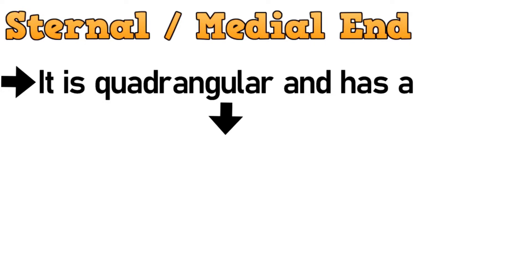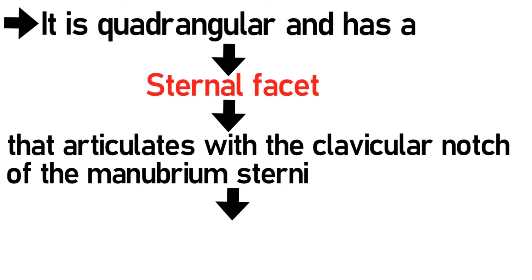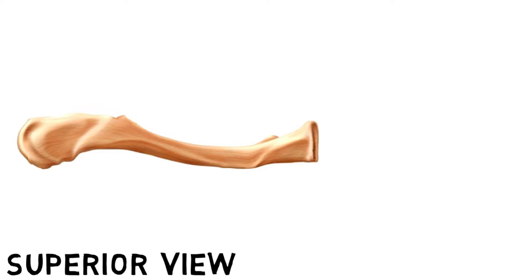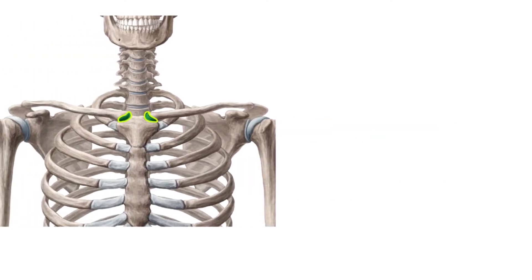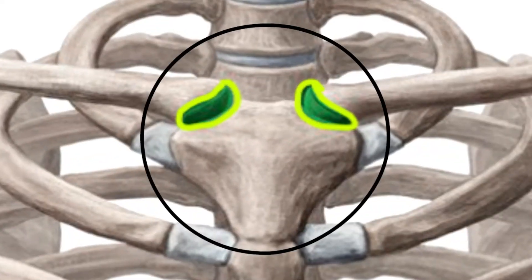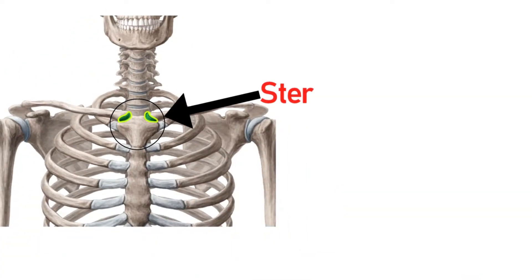Starting with the sternal end. The sternal end is quadrangular and has a sternal facet that articulates with the clavicular notch of the manubrium to form the sternoclavicular joint. Let's have a look. This is the superior view of the bone. As you can see, this quadrangular part is the sternal end. This is the sternal facet which articulates with the manubrium. This is how the sternal end articulates with the manubrium sterni to form the sternoclavicular joint.